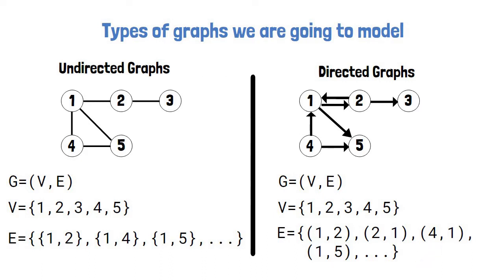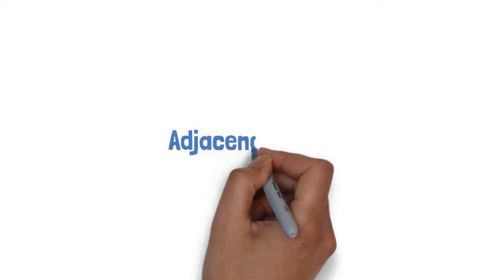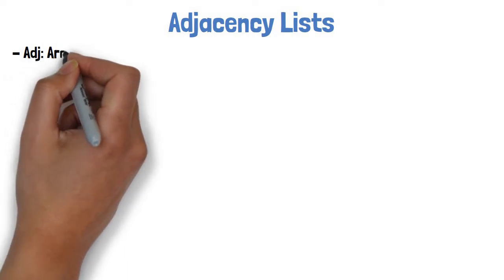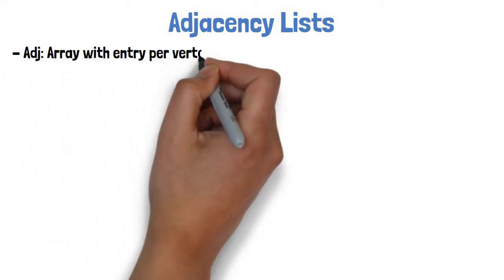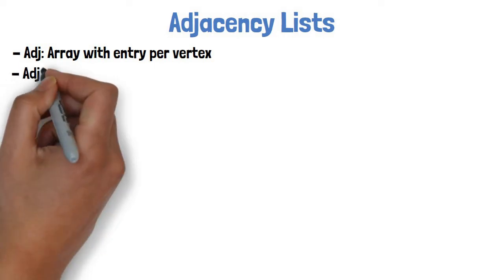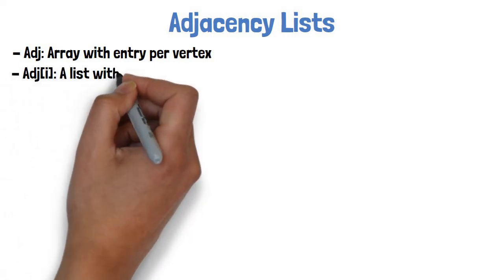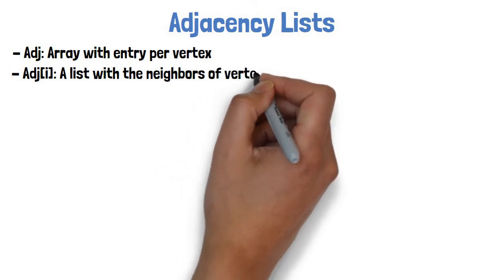Now we are ready to see how to represent a graph. There are two very common graph representations. We start with adjacency list. The adjacency list representation includes an array, commonly named ADJ as a shortcut for adjacency, where each entry belongs to a different vertex and refers to a list that contains all of the vertices adjacent to that vertex.